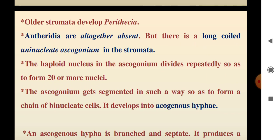The haploid nucleus in the ascogonium divides repeatedly so as to form 20 or more nuclei. The ascogonium then gets segmented in such a way that it forms a chain of binucleate cells — each with 2 nuclei.